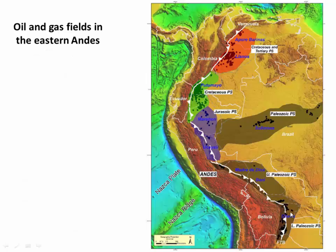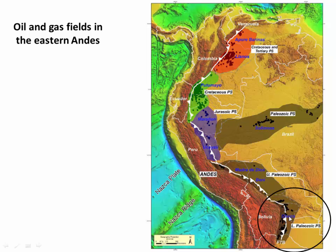Likewise, Folded Thrust Belts like the Sub-Andean Belt are host to most of the oil and gas deposits in South America. You can see this map — each black dot shows an oil-gas deposit, and they're mostly concentrated in Foreland Basins right along the eastern flank of the Andes. Part of the video today will help explain how oil and gas form in these Foreland Basin Folded Thrust Belts.